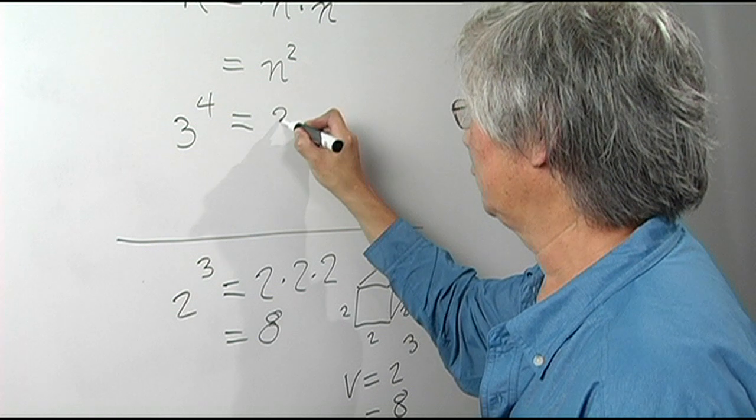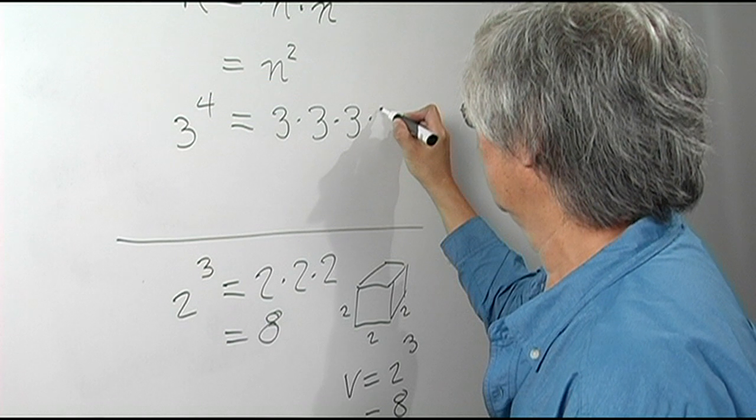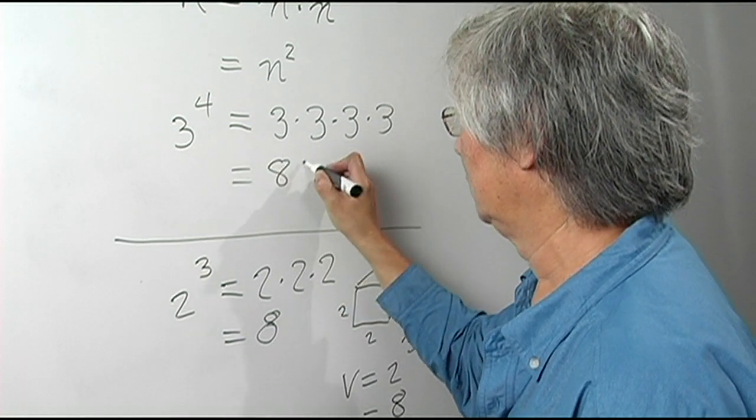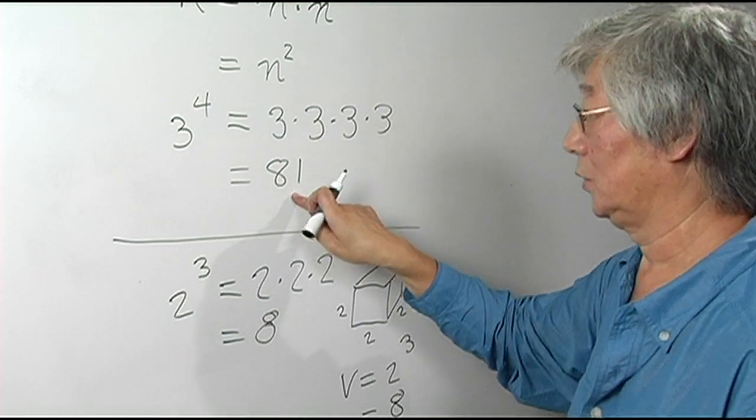That means 3 times itself 4 times. And the answer is 81. 3 times 3 is 9, 3 times 3 is 9, 9 times 9 gives you 81.